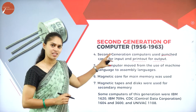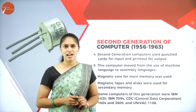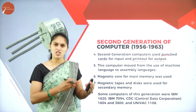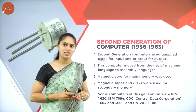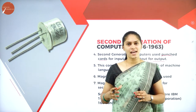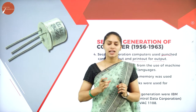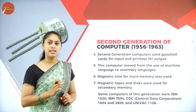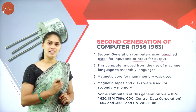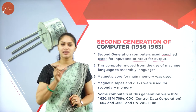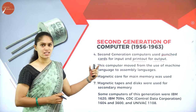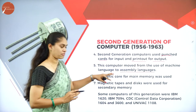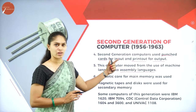In the first generation they used low-level machine language, but in the second generation they moved to assembly level language. In assembly level language, instead of giving data and instructions in zeros and ones, symbols called mnemonics are used, which are more easily understandable than binary values.